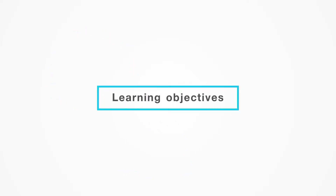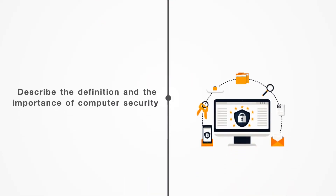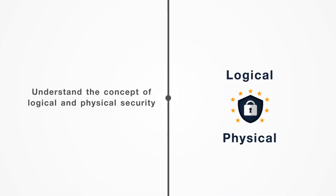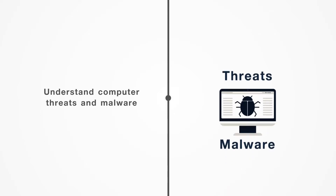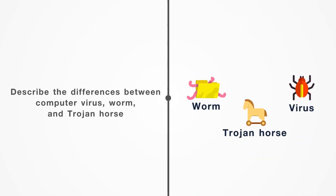Learning objectives: After completing this session, you should be able to describe the definition and the importance of computer security, understand the concept of logical and physical security, understand computer threats and malware, and describe the difference between a computer virus, worm, and Trojan horse.